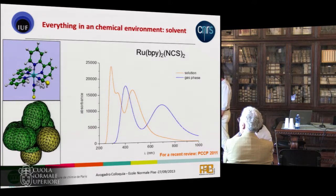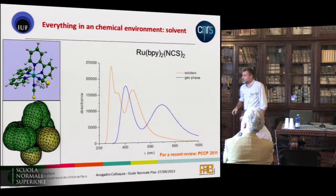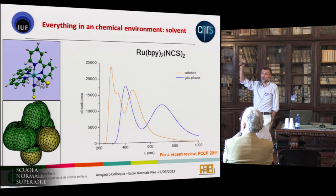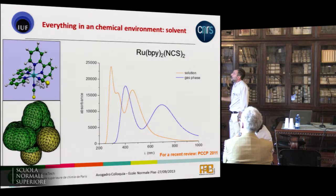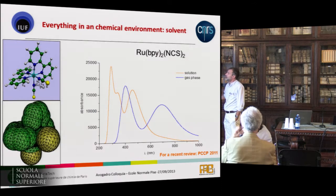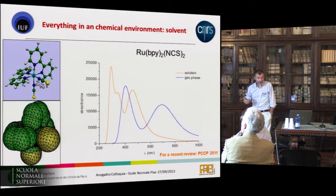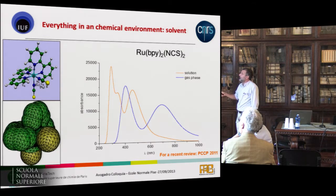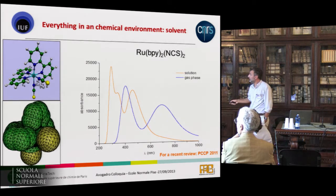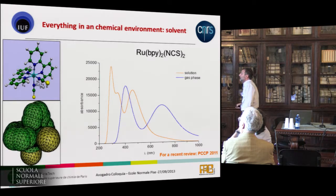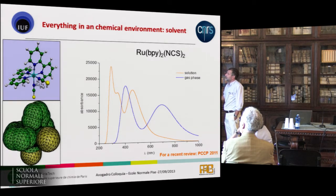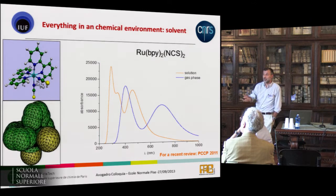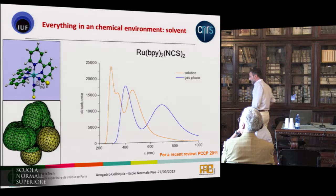All calculations should be done in a chemical environment. The simplest environment is the solvent, where non-equilibrium PCM is a very robust and effective model. Solvent is important for electronic transitions — for the N3 dye used in solar cells, the spectrum computed in gas phase versus solution shows a large shift. The good agreement between the theoretical and experimental spectrum is only achieved in solution, meaning solvent must be considered for this type of transition.